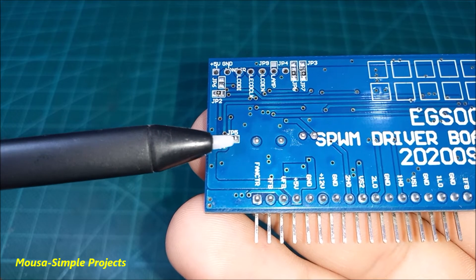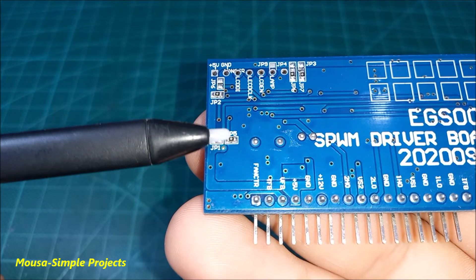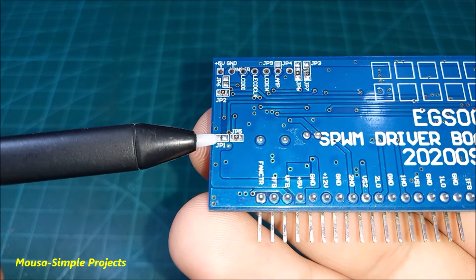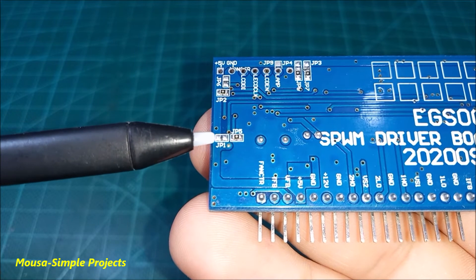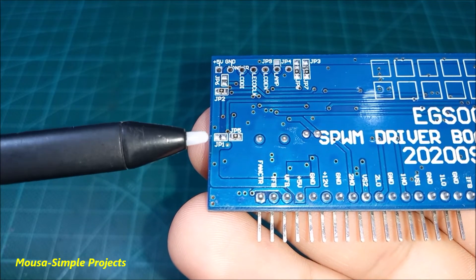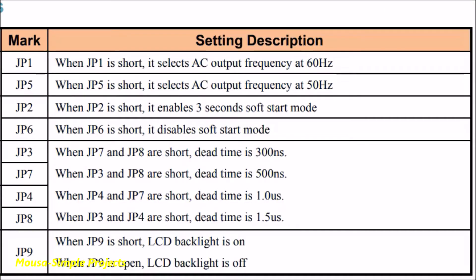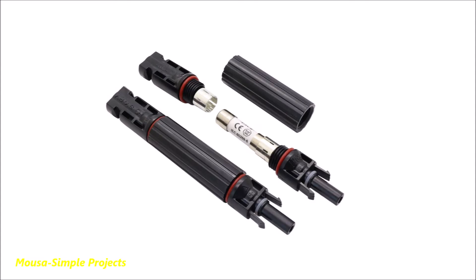If you short out jumper number five, the output frequency will be 50 hertz. You can read more about them in the datasheet. It is so important to connect the proper fuse between the inverter and your high voltage battery or solar panels.